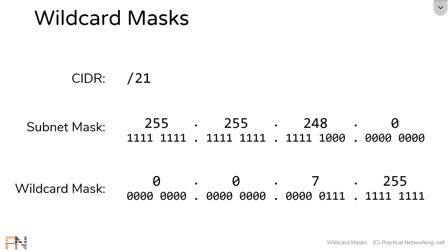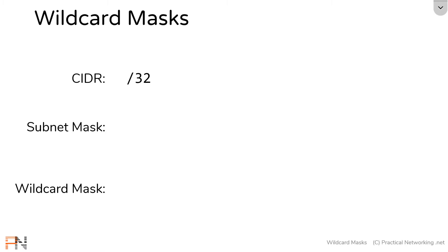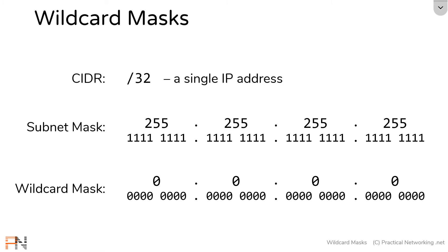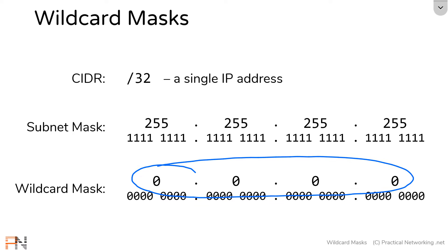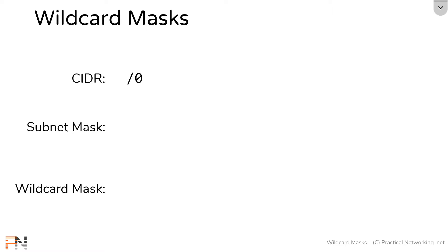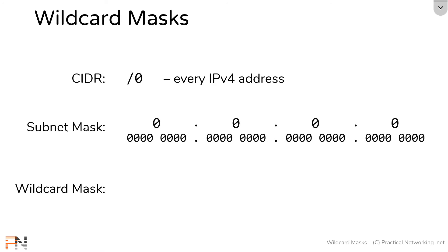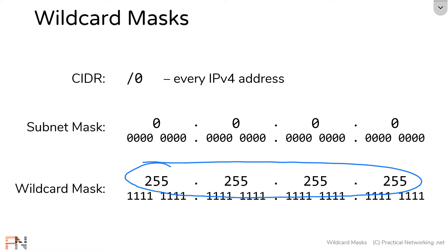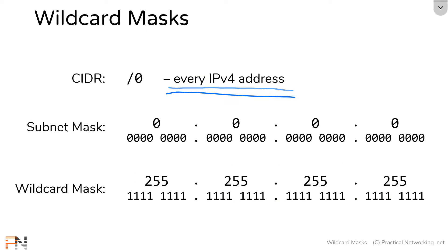Now let's do a couple more special ones. A slash 32, which we know as an indication of a single IP address, has a correlating subnet mask of 255.255.255.255, which makes the correlating wildcard mask 0.0.0.0. So if you ever see the wildcard mask of all zeros, know that you are referring to a single IP address. A slash 0, which is a reference to every IP address in the IPv4 Internet, has a correlating subnet mask of 0.0.0.0, therefore the wildcard mask would be 255.255.255.255. So if you ever see that wildcard mask, know that you are referring to every IP address in the IPv4 Internet.